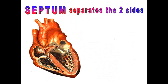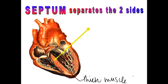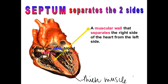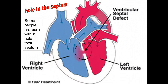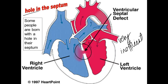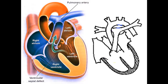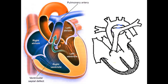The septum is the next part you need to know. It's the big muscle that separates the left ventricle from the right ventricle. It's a thick muscle that basically prevents the deoxygenated blood from mixing with the fresh oxygenated blood. Some people are born with a hole in their septum, which causes deoxygenated and oxygenated blood to mix. This is very inefficient because the left side of the heart ends up pumping a lot of deoxygenated blood around the body, making it harder to get oxygen to all parts of the body.